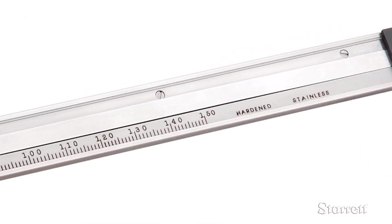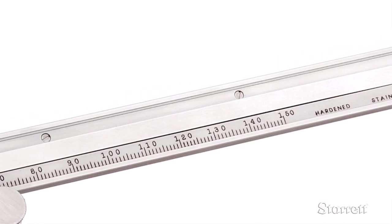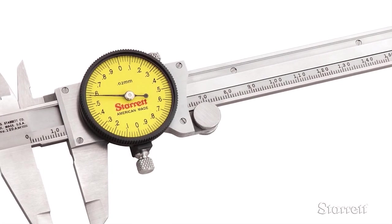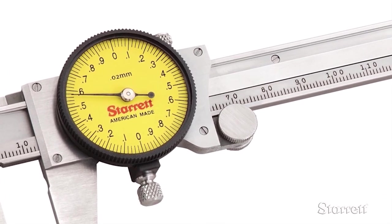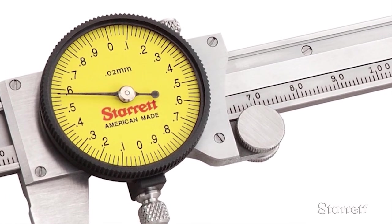This metric dial caliper has a bar graduation for each 10 millimeters and 100 black graduations on a yellow dial face, each representing 0.02 millimeters.